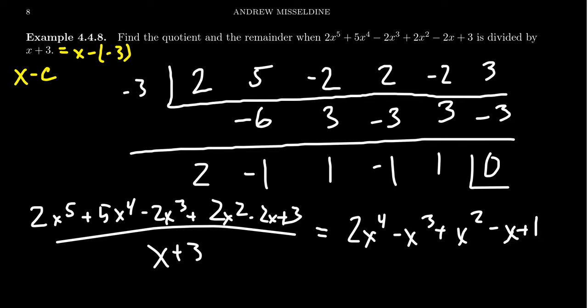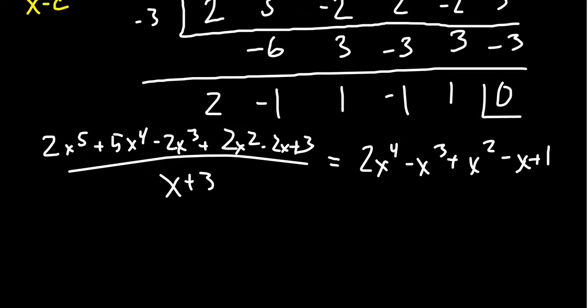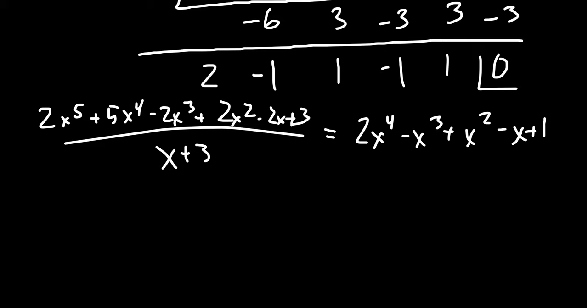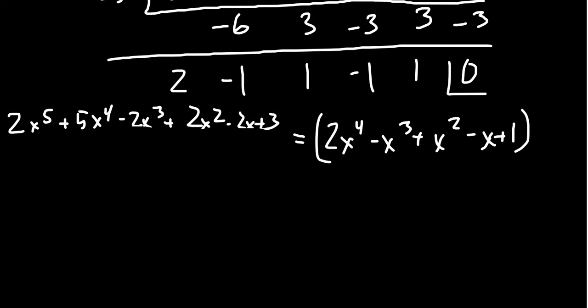So you notice that in this situation, when you took the numerator and divided by x plus 3, we actually got a polynomial, right? This actually suggests we have a factorization. We could write this in the following way. Turns out we actually found a factorization, because when the remainder is 0, that actually means we have a factor. x plus 3 is a factor, and then the other factor is 2x to the 4th minus x cubed plus x squared minus x plus 1.